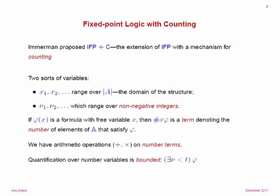With 20 years of hindsight, here is a slightly different presentation. We call it IFP+C, fixed-point logic with counting. We take IFP and add two sorts of variables: variables ranging over the domain of the structure, and variables ranging over non-negative integers—the number variables. If you have a formula with a free variable X, you can form a term 'number X phi,' which denotes the number of elements satisfying phi.